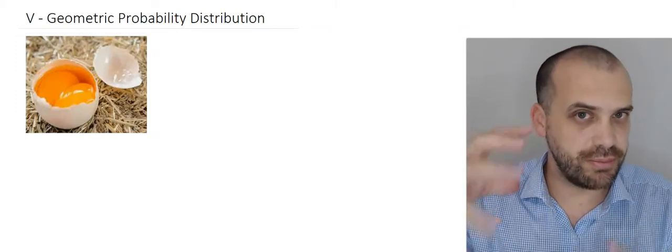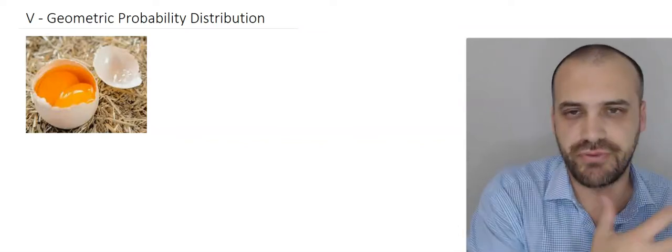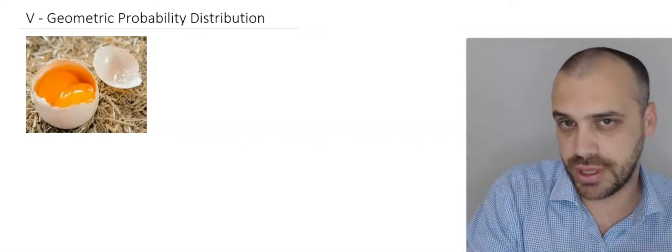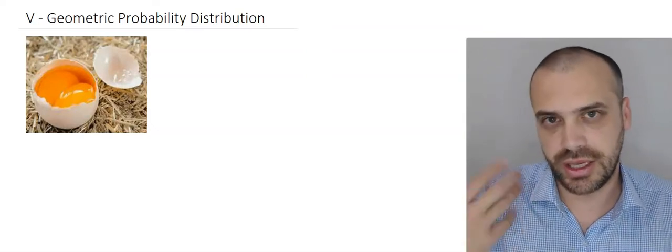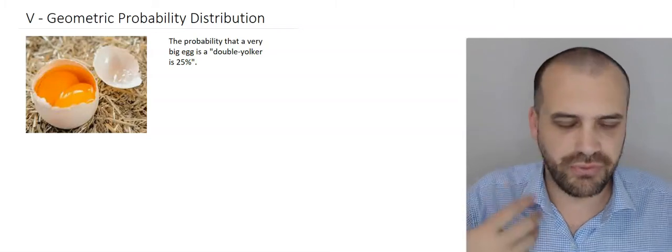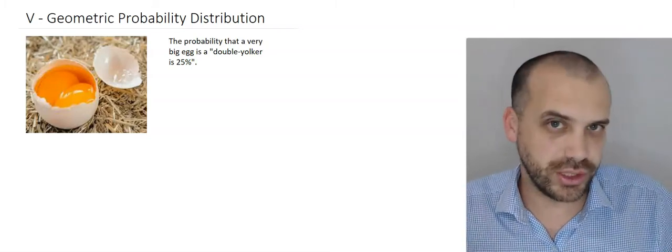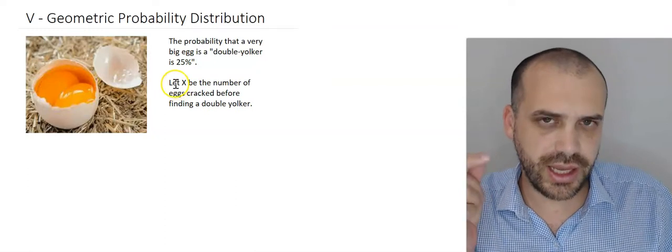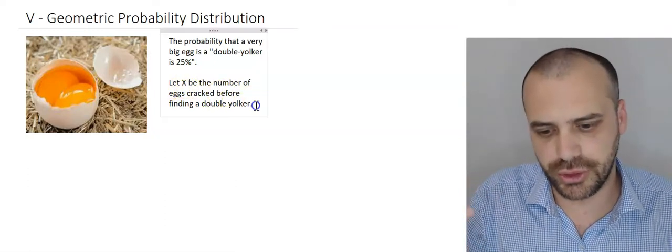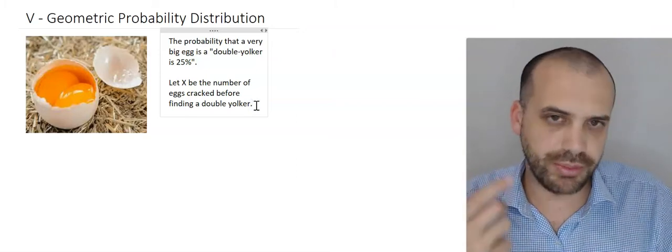The first step is to find a very big egg, and if you collect up a bunch of very big eggs, the probability that each one of those very big eggs has a double yoke in it is 25%. The question is, how many of these eggs do you have to crack before you'll get a double yoker? In mathematical terms, we're going to let X be the number of eggs cracked before finding a double yoker, and we're going to determine the probability distribution.